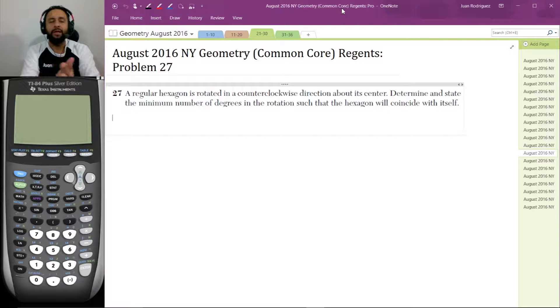So here's this problem. A regular hexagon is rotated in a counterclockwise direction about its center. Determine and state the minimum number of degrees in the rotation such that the hexagon will coincide with itself.